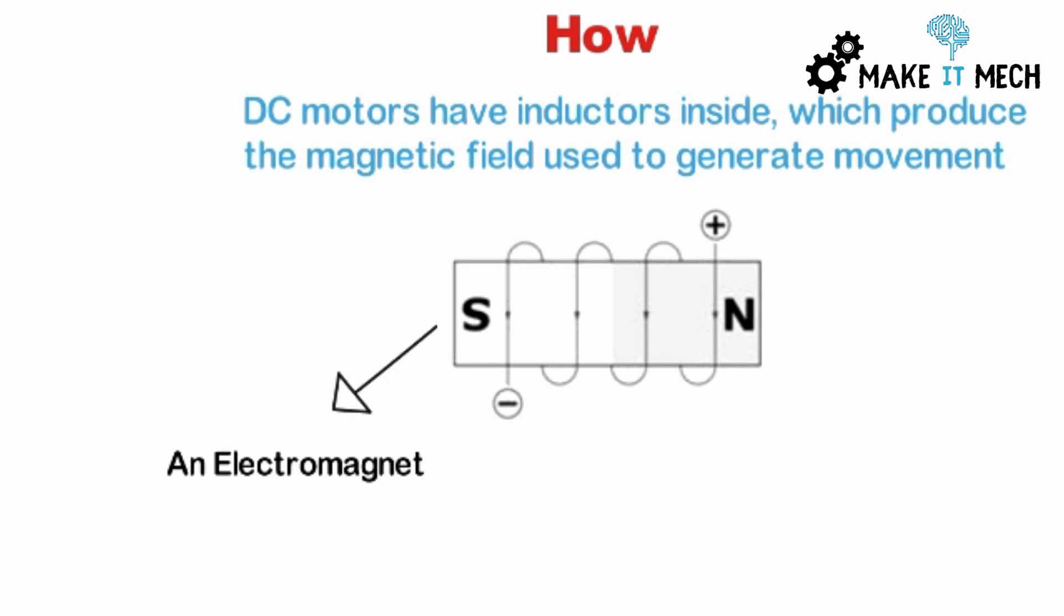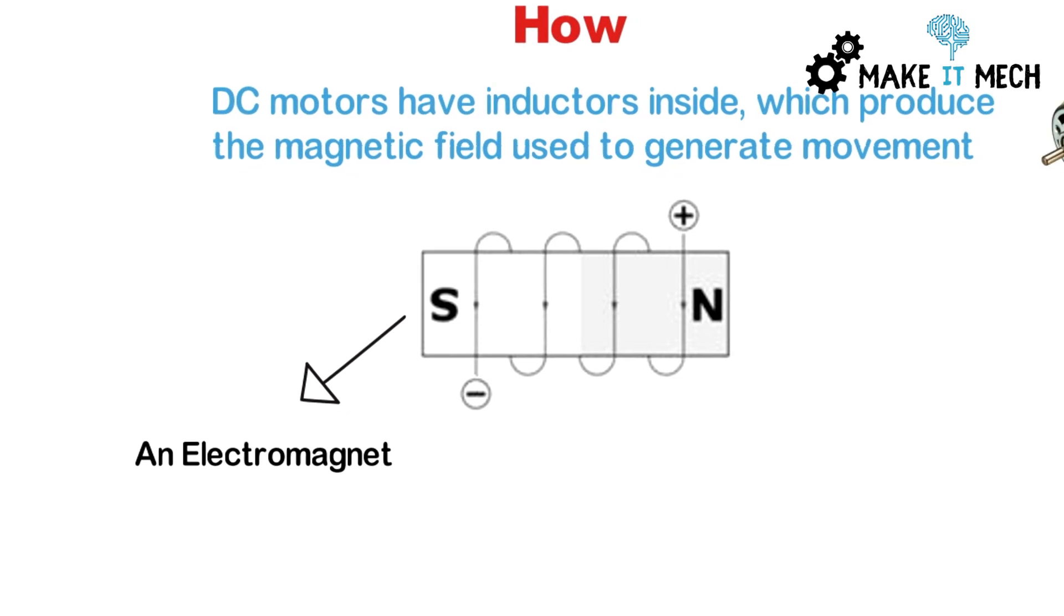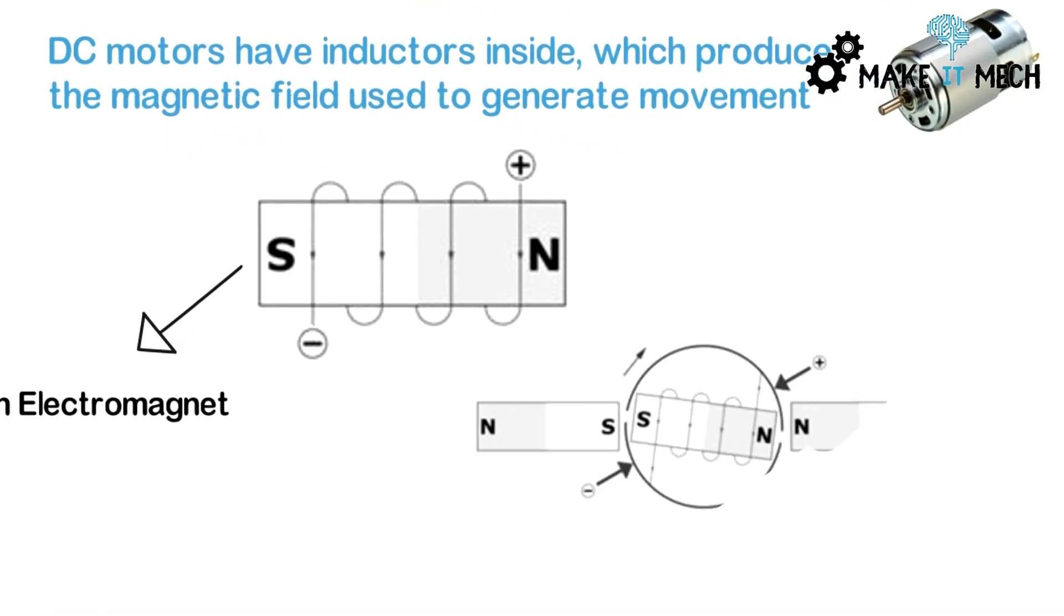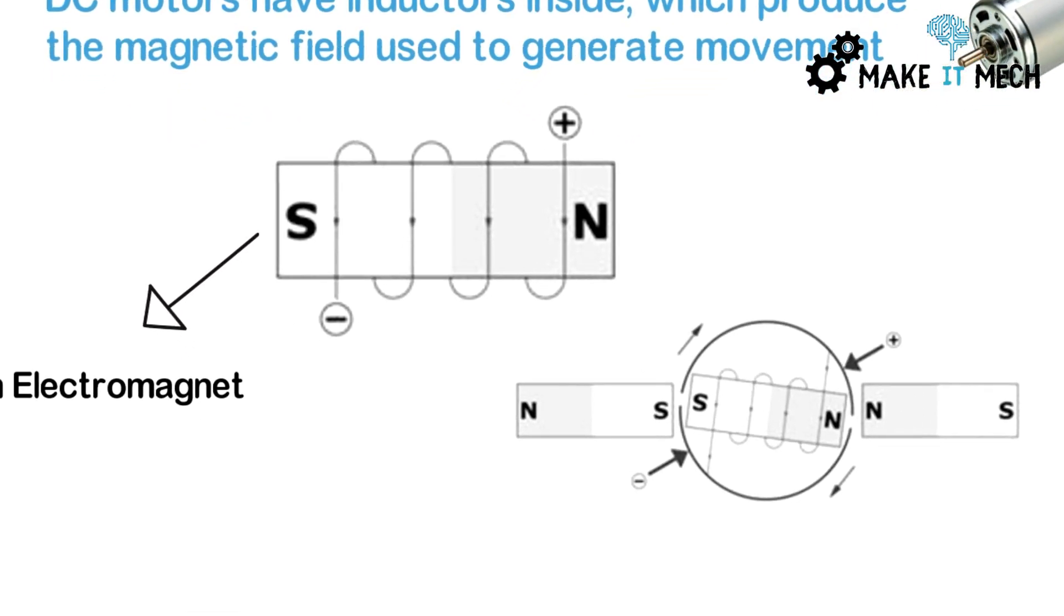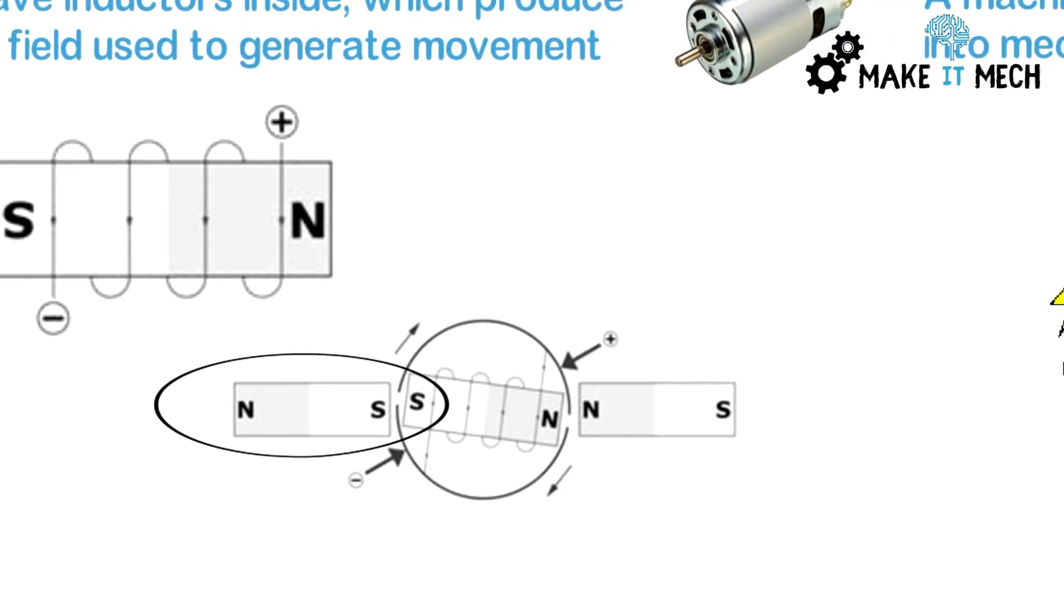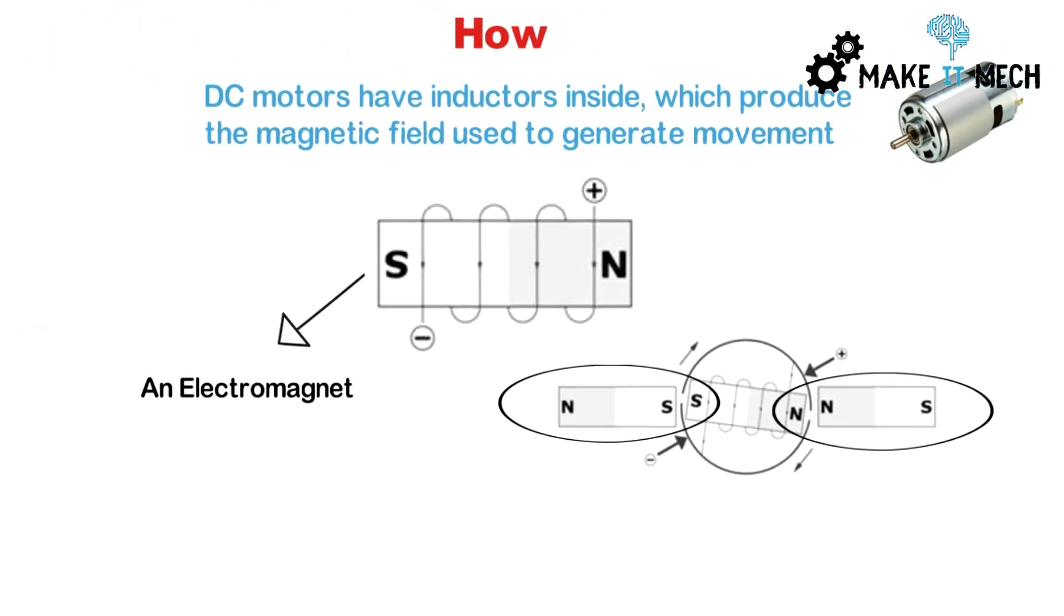An electromagnet is a type of magnet in which the magnetic field is produced when we provide an electric current. It usually consists of a wire that is wound into a coil. As you can see, when we place an inductor between the magnetic forces, the repulsive and attractive forces will produce the turning effect. They will produce a torque.